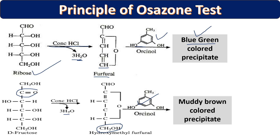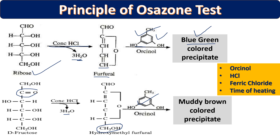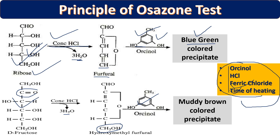There are different variables that affect the intensity of the color. The intensity does not depend only on the ribose or fructose availability — it also depends on: the amount of orcinol, the amount of HCl, the presence of ferric chloride, and the time of heating. These four variables, along with the amount of sample, determine the intensity of the color. To isolate the effect of the test sample, we must keep all four other variables fixed.